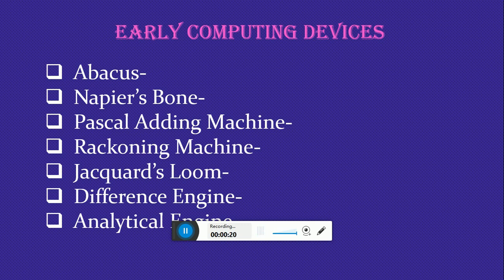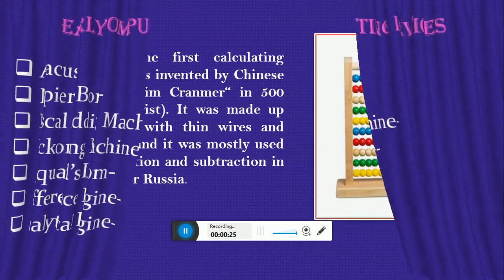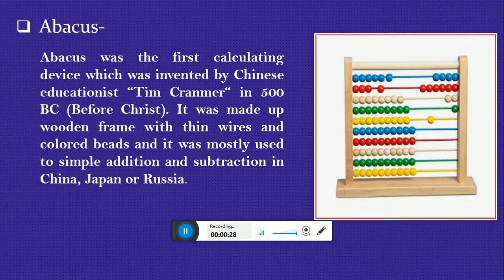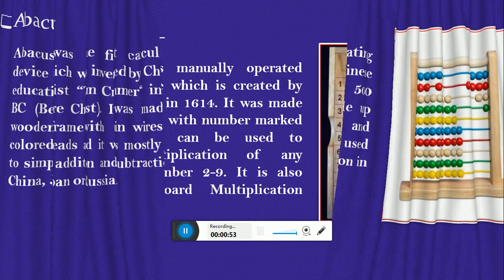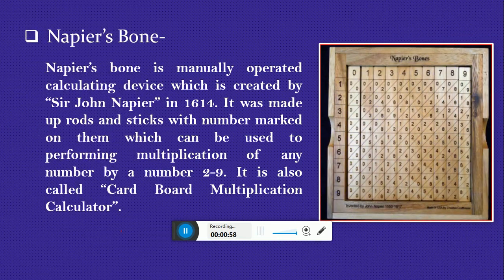The first device is the Abacus. The Abacus was the first calculating device, which was invented by Chinese educationist Tim Cranmer in 500 BC. It was made of a wooden frame with thin wires and colored beads, and it was mostly used for simple addition and subtraction in China, Japan, and Russia.